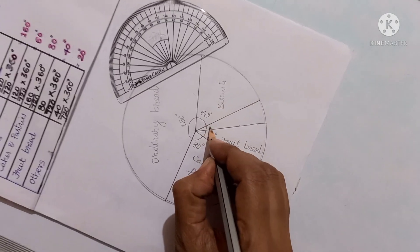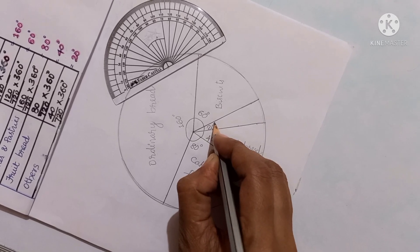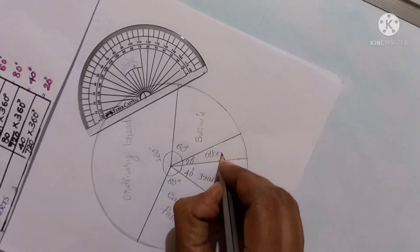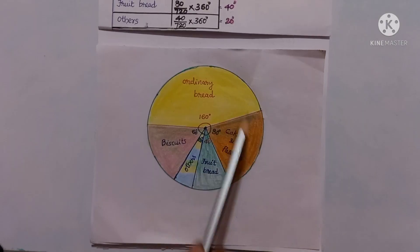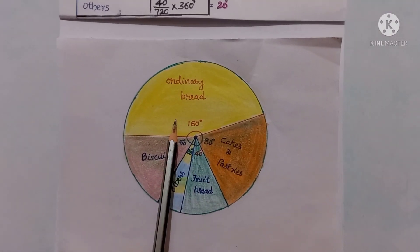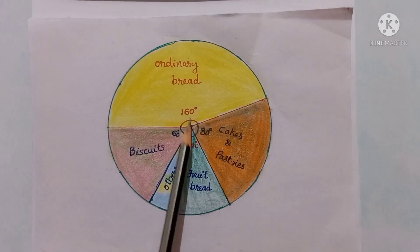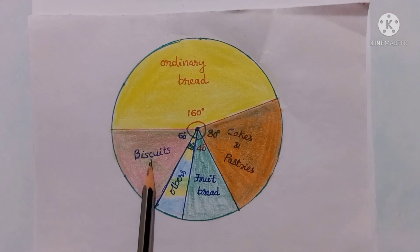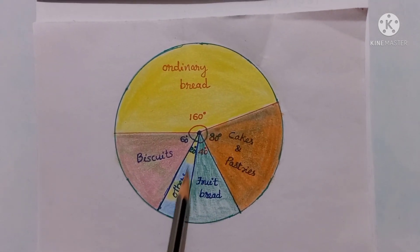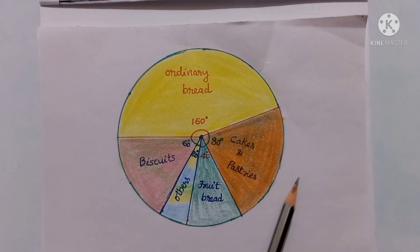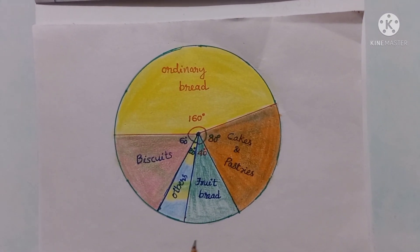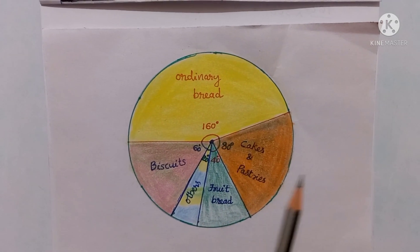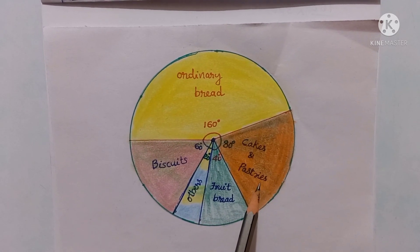The remaining balance is 20 degrees, representing others. At a glance, our pie chart clearly shows: ordinary bread 160 degrees, cakes and pastries 80 degrees, biscuits 60 degrees, fruit bread 40 degrees, and others 20 degrees. Our pie chart is completed successfully. If you have any doubts, leave a comment below and I will definitely answer.